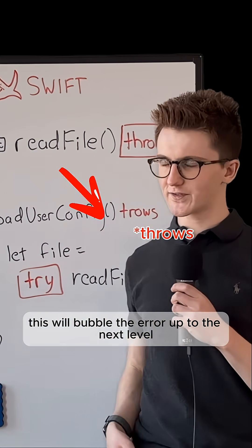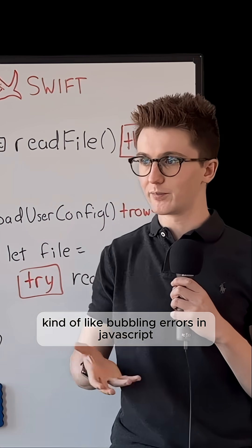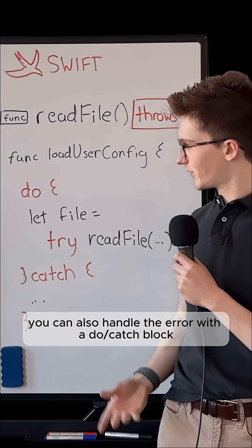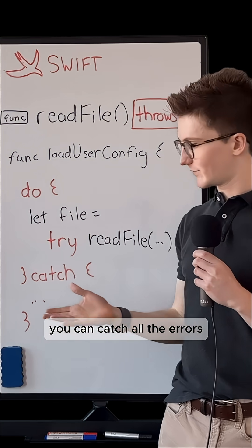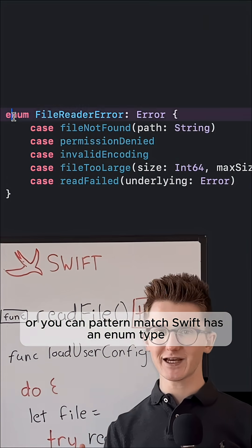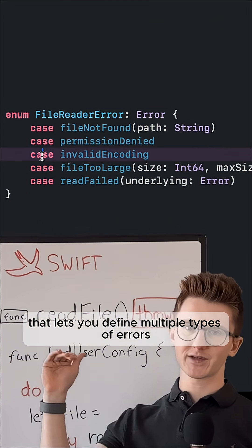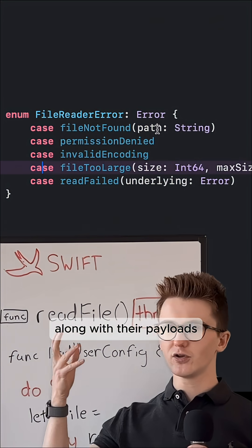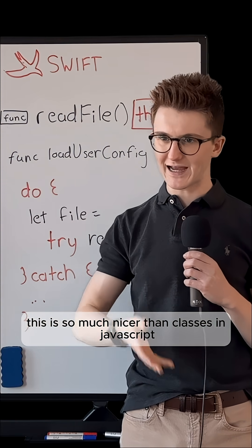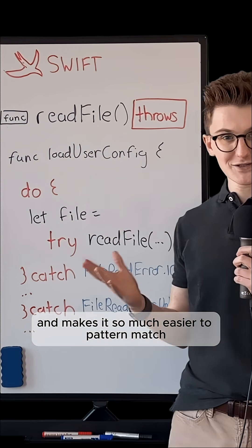Without anything else, this will bubble the error up to the next level, kind of like bubbling errors in JavaScript. But you can also handle the error with a do-catch block. You can catch all the errors, or you can pattern match. Swift has an enum type that lets you define multiple types of errors along with their payloads.